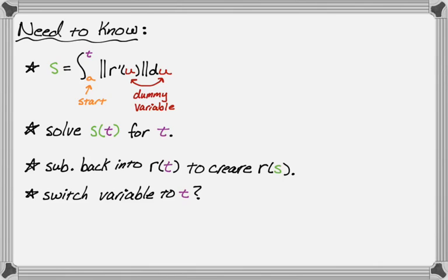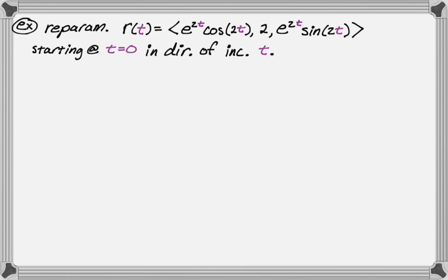Let's see what the problem is. We want to re-parameterize r of t equals e to the two t cosine of two t, two, e to the two t sine of two t. We're going to start at t equals zero and go in the direction of increasing t.